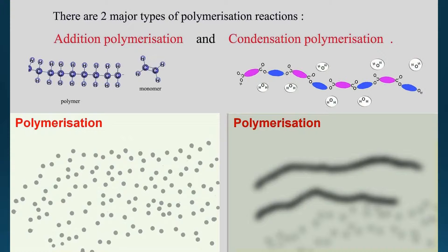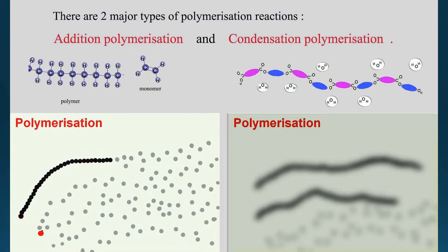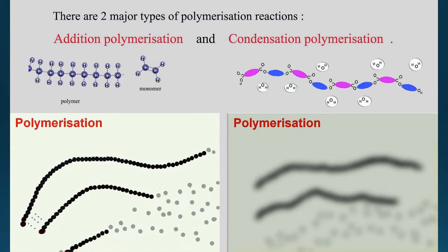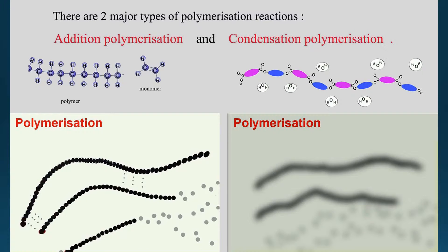Let's quickly revise addition polymerization. In addition polymerization, an individual monomer with a double bond — such as ethene — links into a polymer as shown. They form into a long chain of polymer, and that's the rule of addition polymerization. Now let's study condensation polymerization.